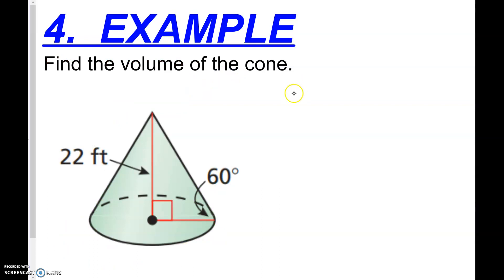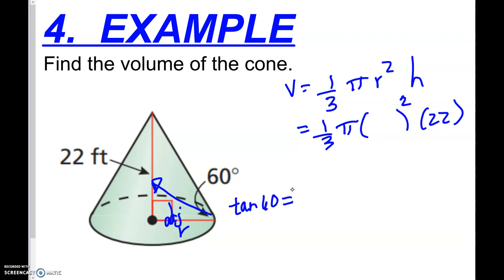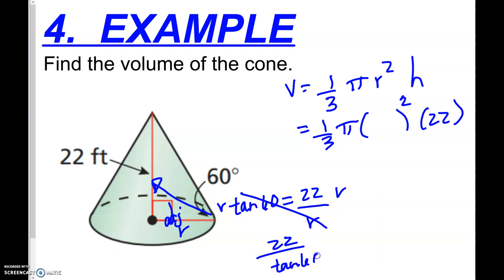Last question: find the volume of this cone when given a 60° angle. Volume is one-third · πr² · h. The height is 22 feet, but we need the radius. Using the angle: tangent of 60° equals the opposite side (22) over the adjacent side (r). Cross-multiplying and dividing by tangent of 60° gives r = 22 / tan(60°).